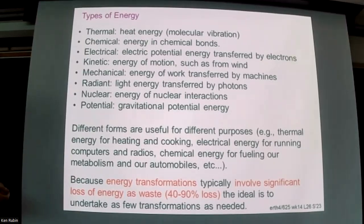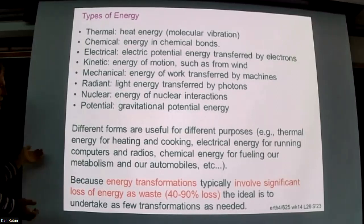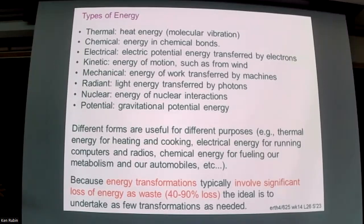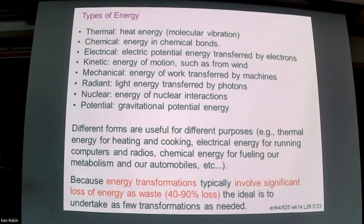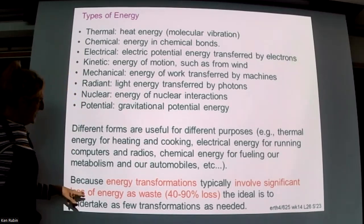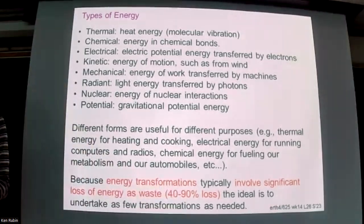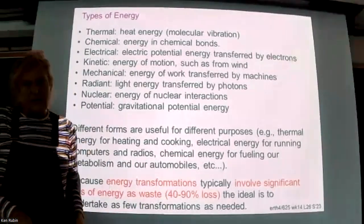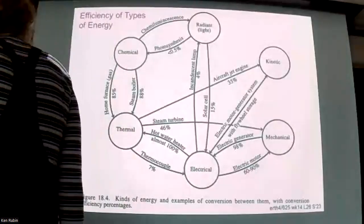Different energy sources are used for different purposes — thermal energy for heating and cooking, chemical energy for running a car. As a society we generate energy in various ways, transform it into other kinds, store it, and deliver it to customers. When transferring between energy types, we can lose something like 40 to 90 percent of that energy, so we're generating energy and then losing a lot during transformation.